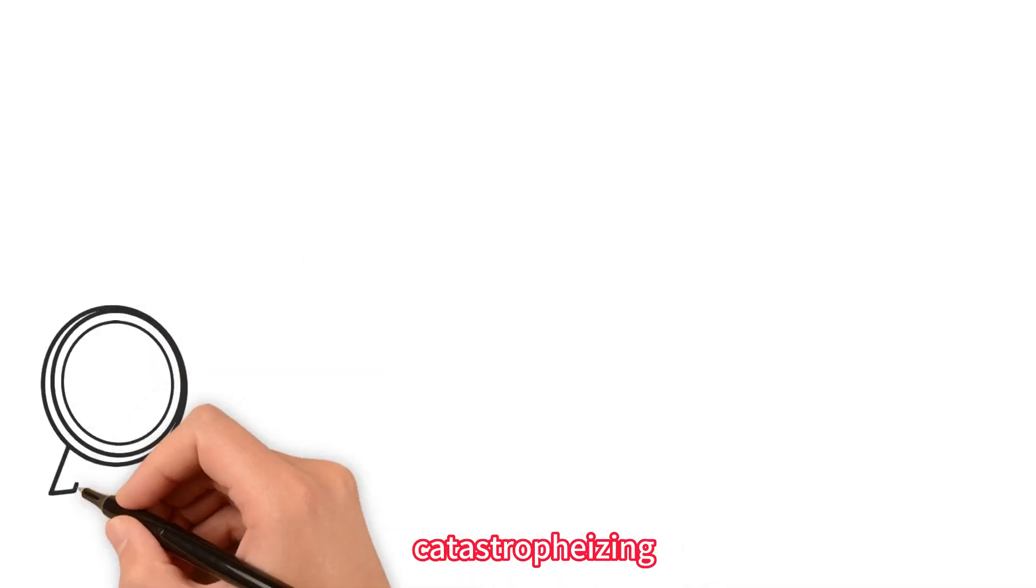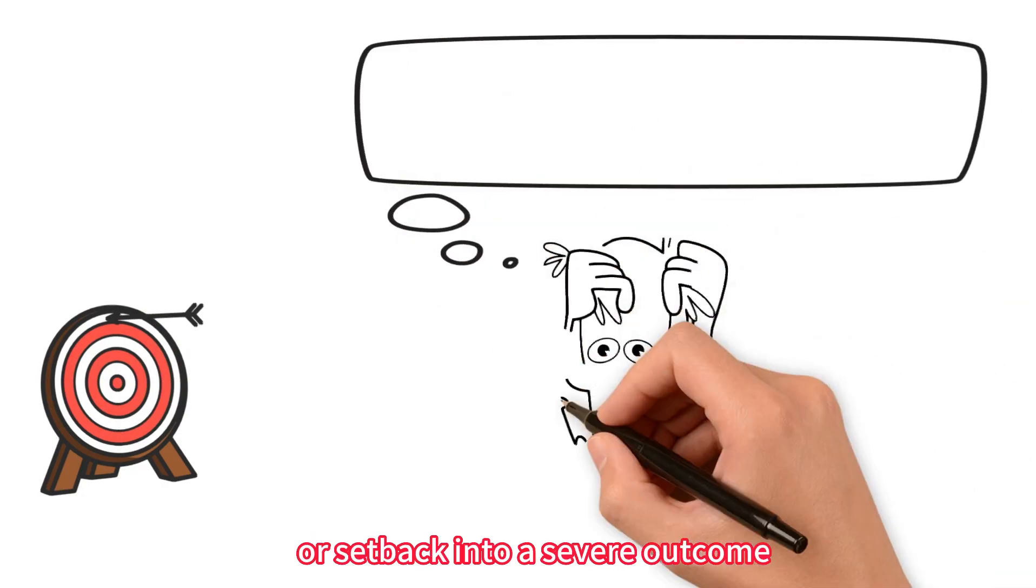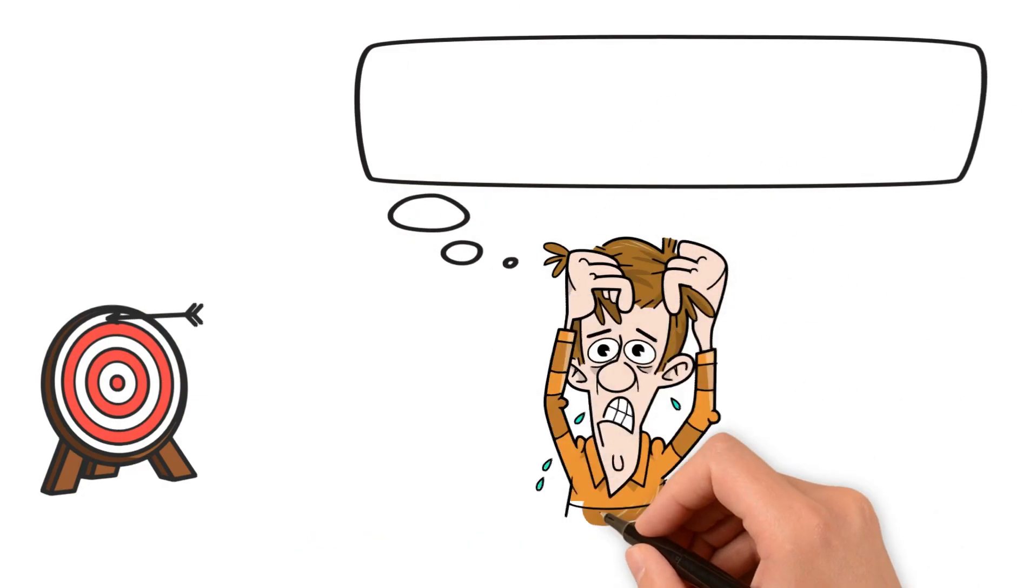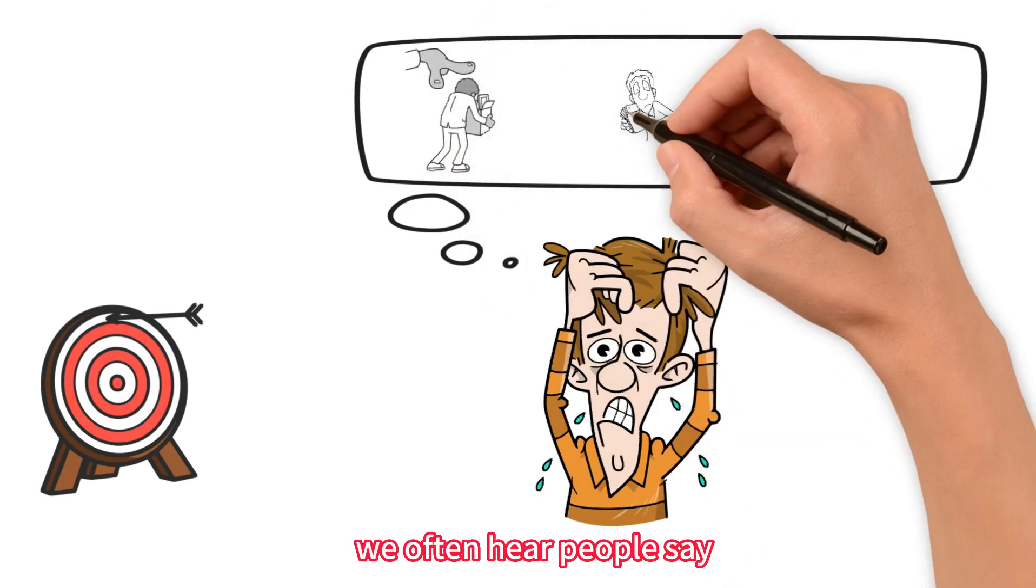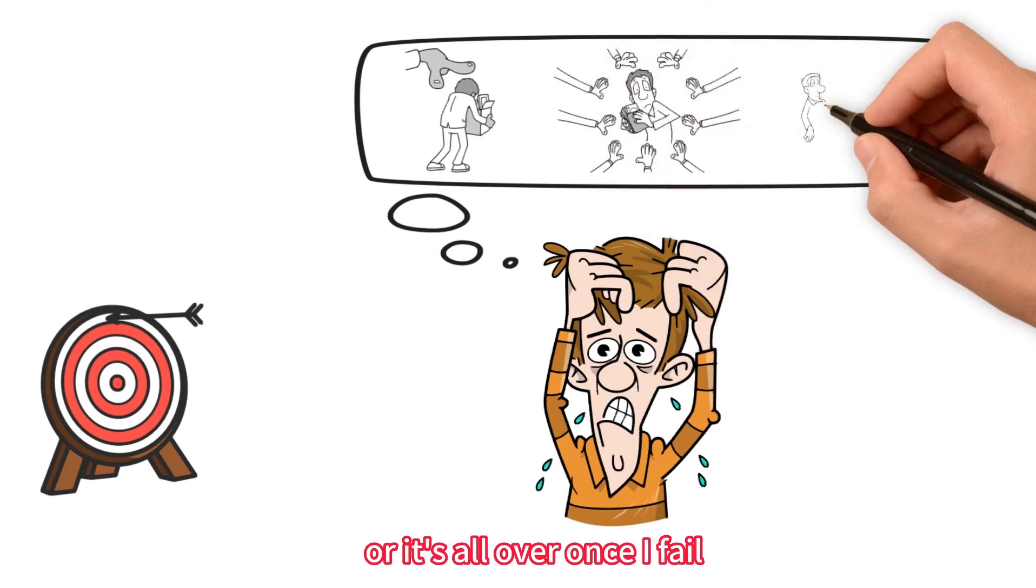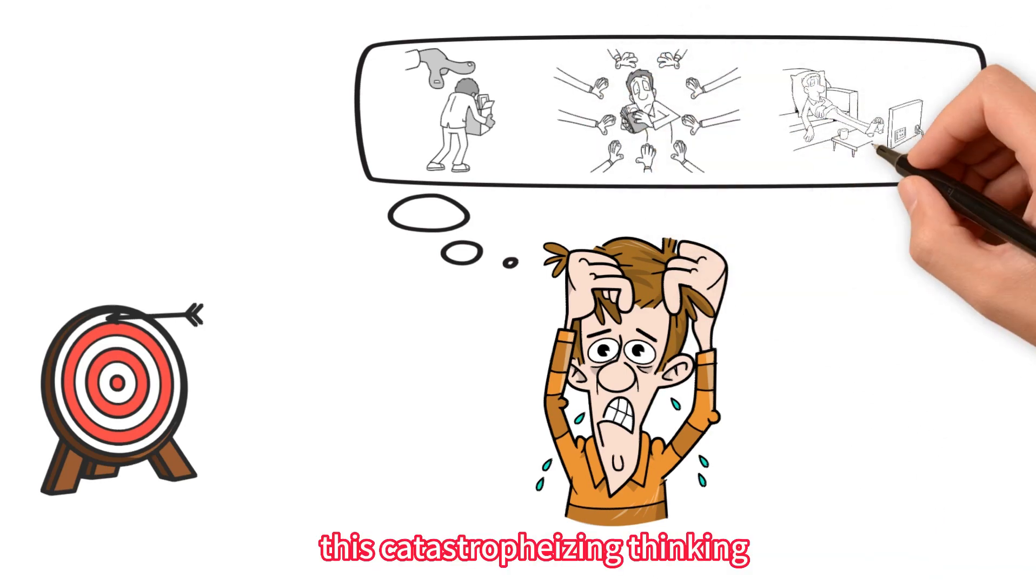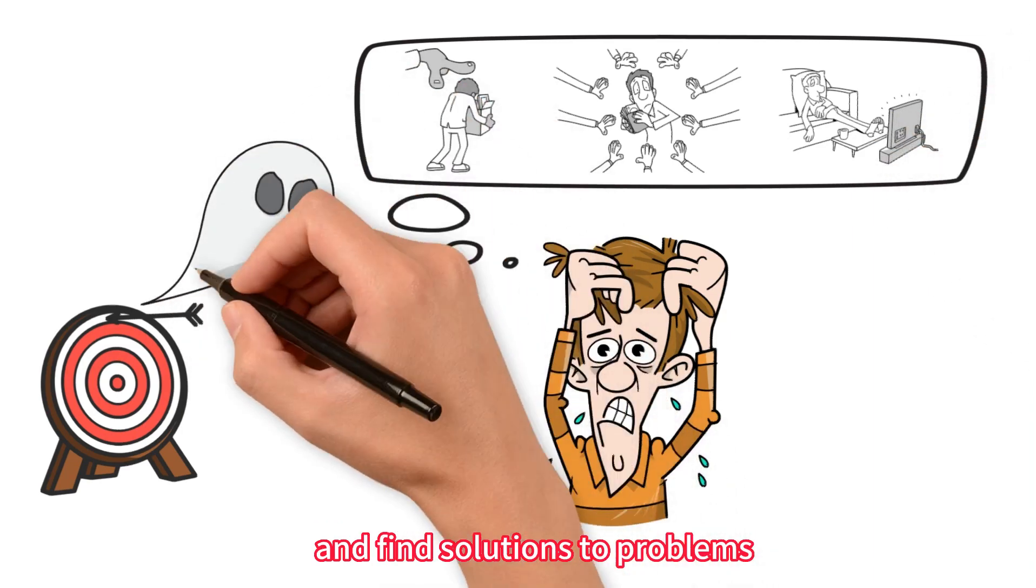3. Catastrophizing. This refers to our tendency to exaggerate a single failure or setback into a severe outcome. This kind of thinking often leads to severe depression and anxiety. We often hear people say, I will never be okay again or it's all over once I fail. This catastrophizing thinking easily impairs our ability to think rationally and find solutions to problems.